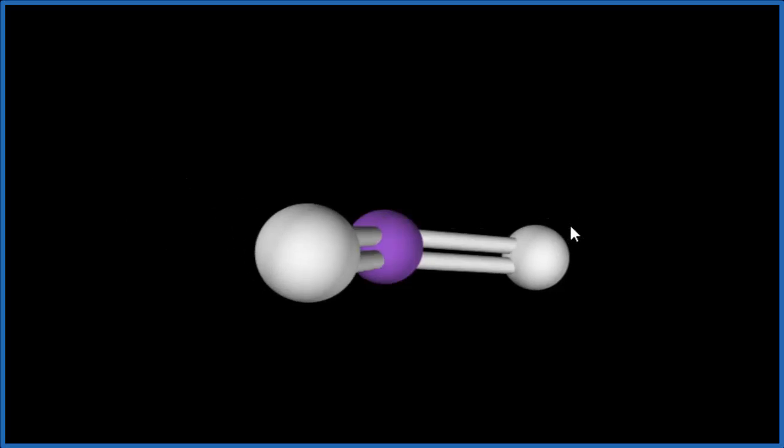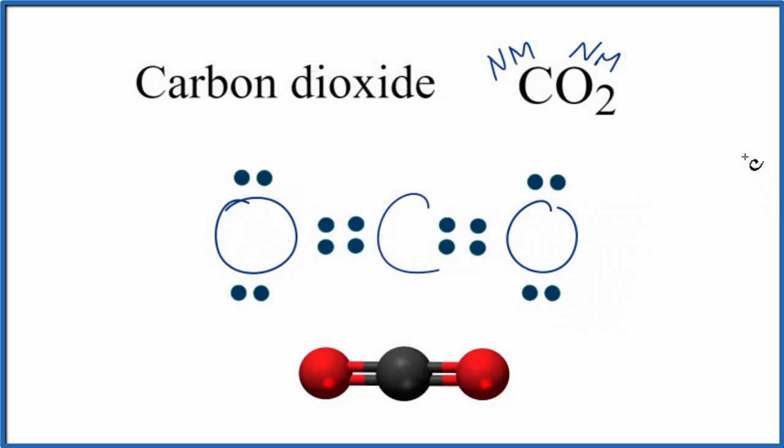Let's go back to our Lewis structure. So to recap, we said we have nonmetals bonded together. That gives us covalent or molecular bonds. The electrons are shared between the atoms, so each atom can obtain an octet.